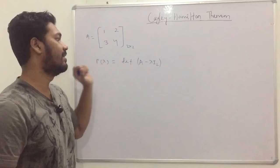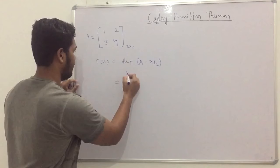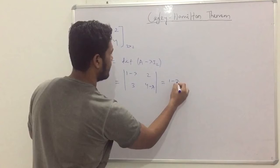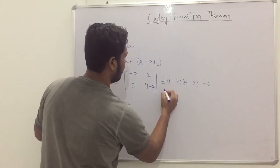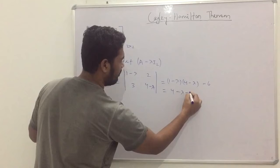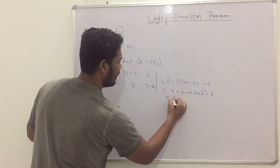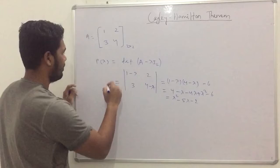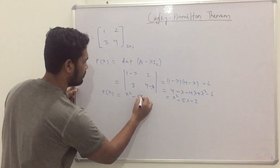Taking the determinant of A − λI, we get the 2×2 determinant: (1−λ)(4−λ) − (2)(3), which equals (1−λ)(4−λ) − 6. Expanding: 4 − λ − 4λ + λ² − 6, which gives λ² − 5λ − 2. So the characteristic polynomial is P(λ) = λ² − 5λ − 2.